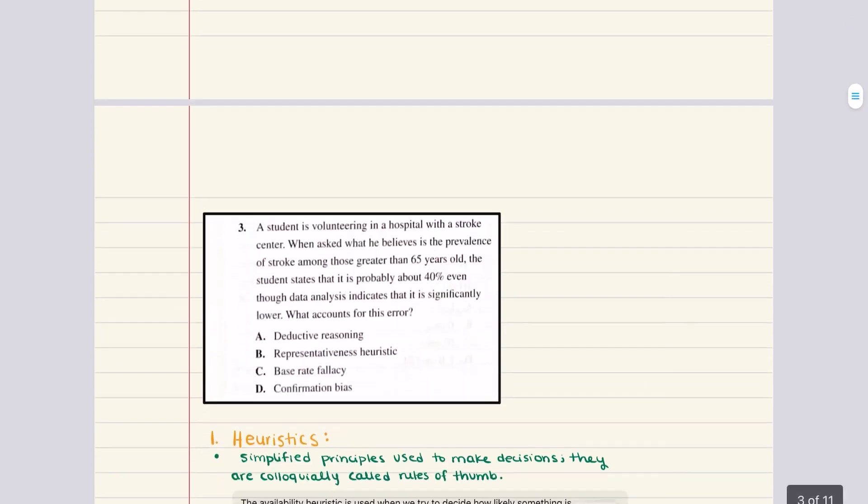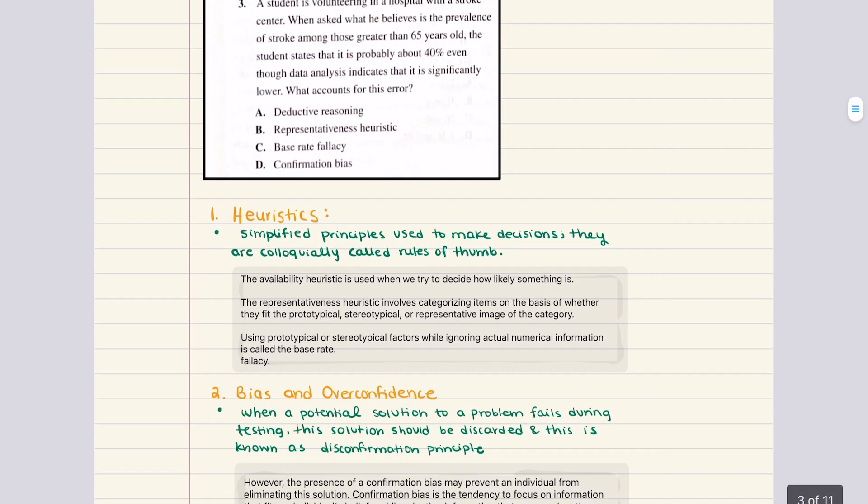Let's move on to problem number three. A student is volunteering in a hospital with a stroke center. When asked what he believes is the prevalence of stroke among those greater than 65 years old, the student states that it is probably about 40 percent even though data analysis indicates that it is significantly lower. What accounts for this error? Is it deductive reasoning, representativeness heuristic, base rate fallacy, or confirmation bias.